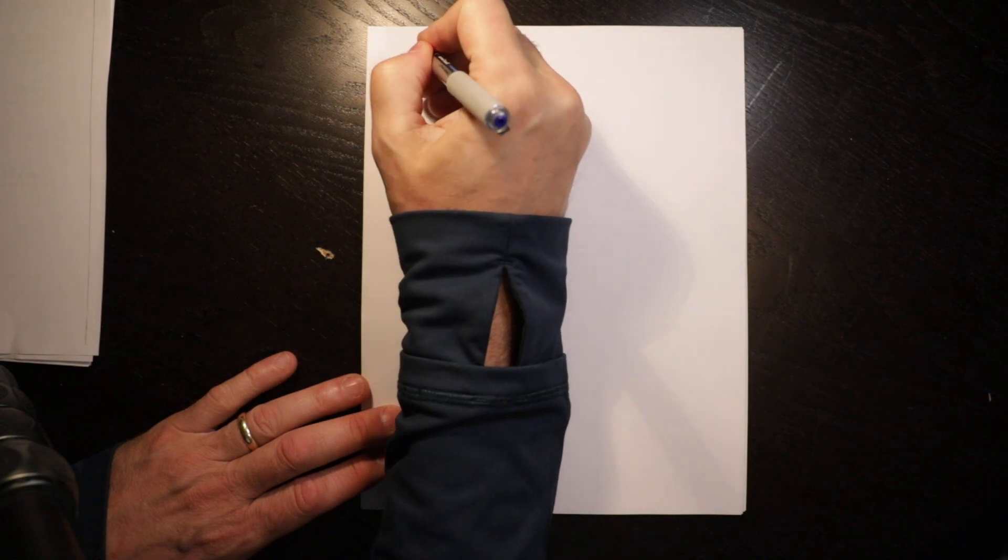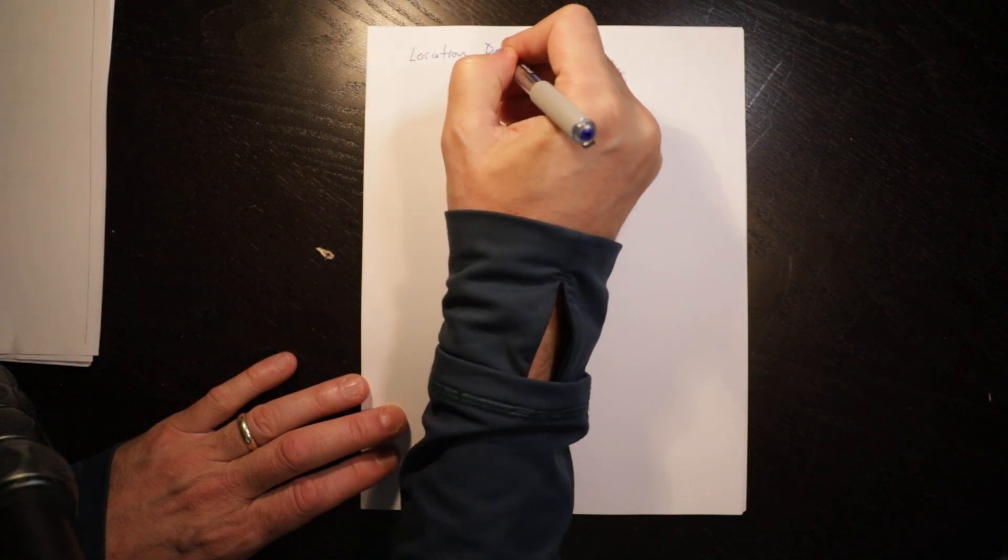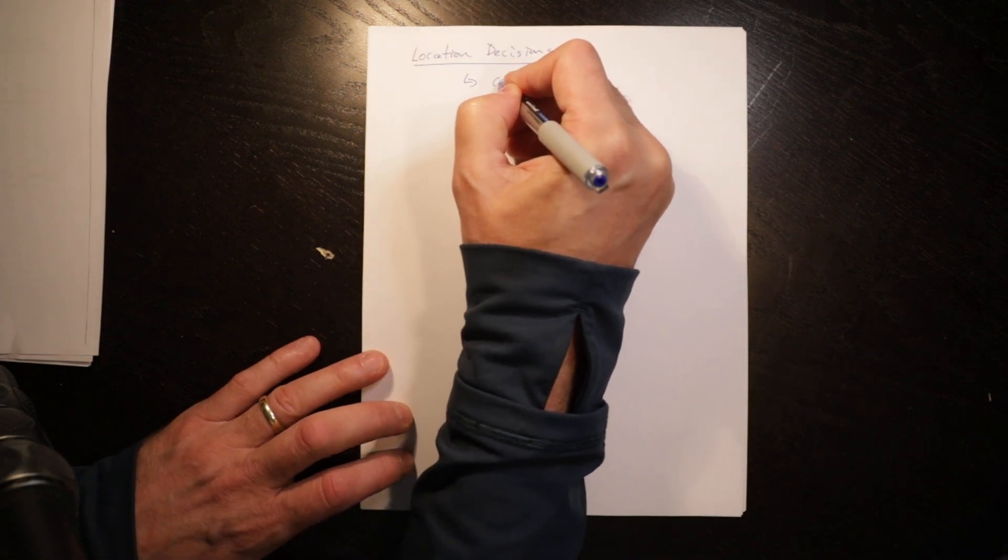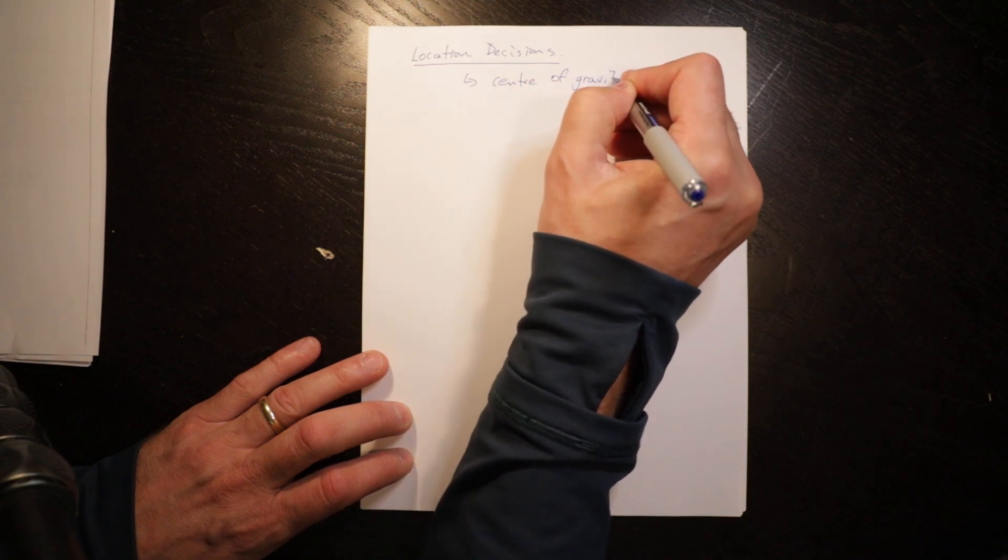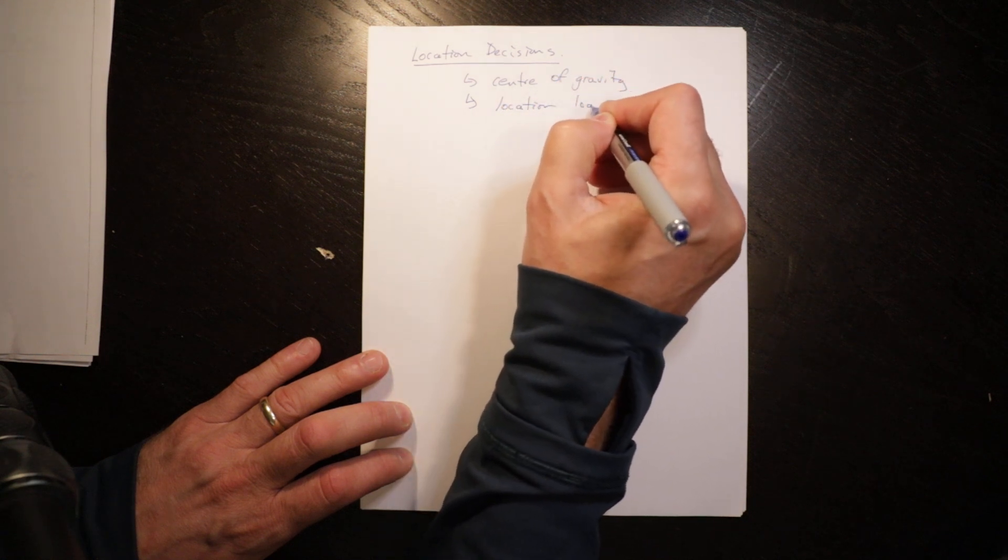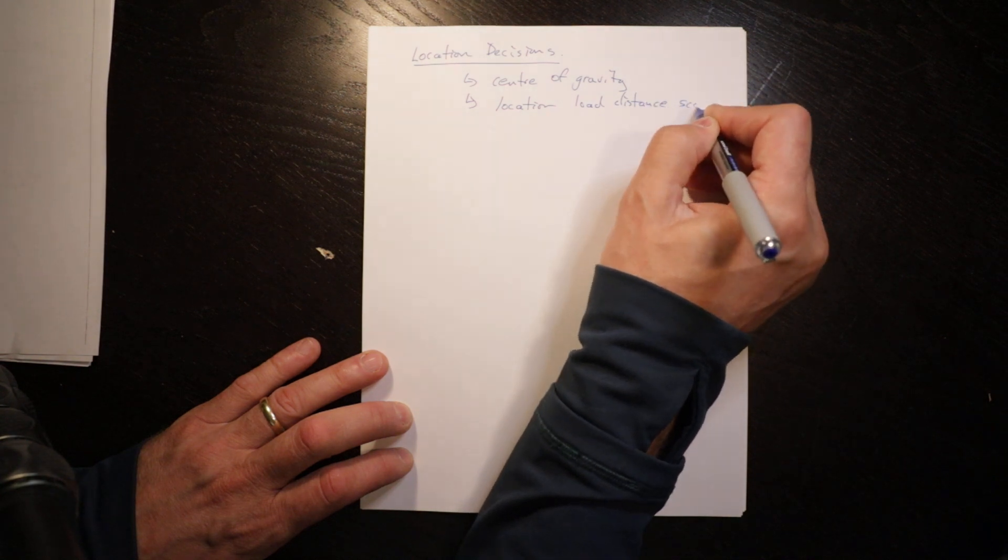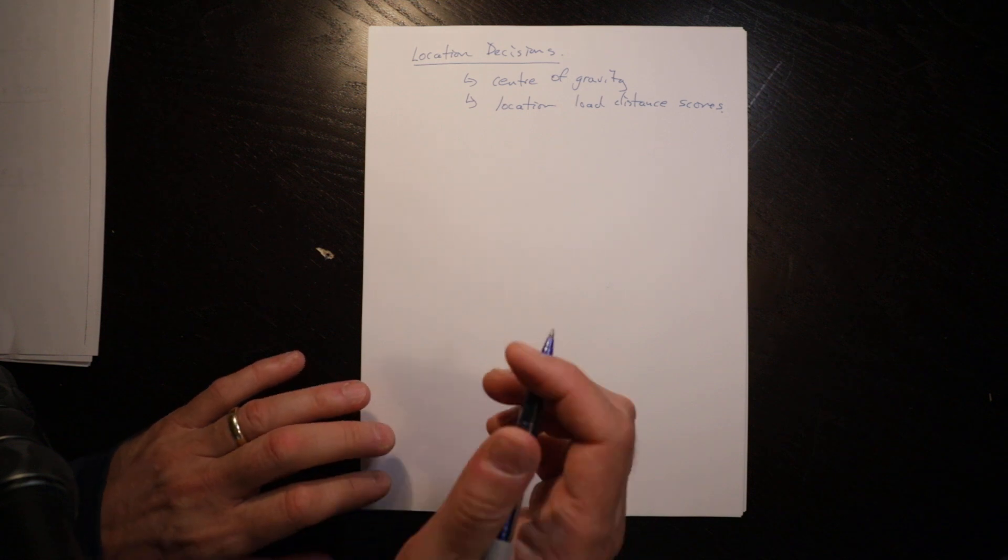In this video we're going to look at location decisions, specifically at center of gravity and location load distance scores. These are two tools that can help inform location decisions. They can't make location decisions for you.